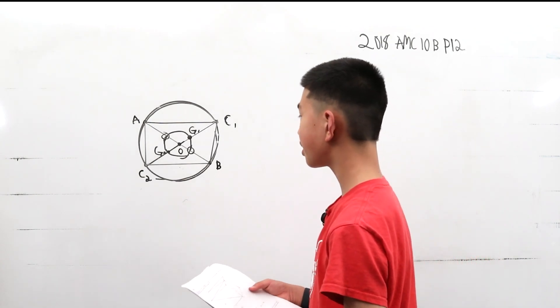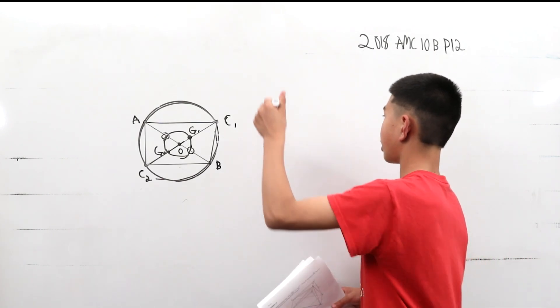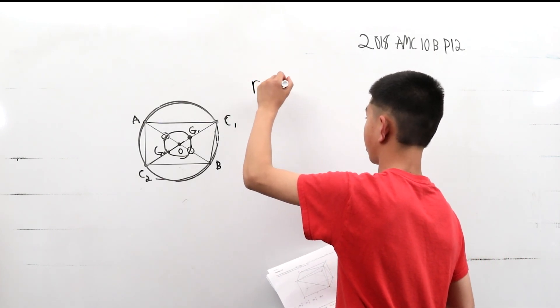Now, we can find the radius of the circle. Since the diameter is 24, the radius is equal to 12.